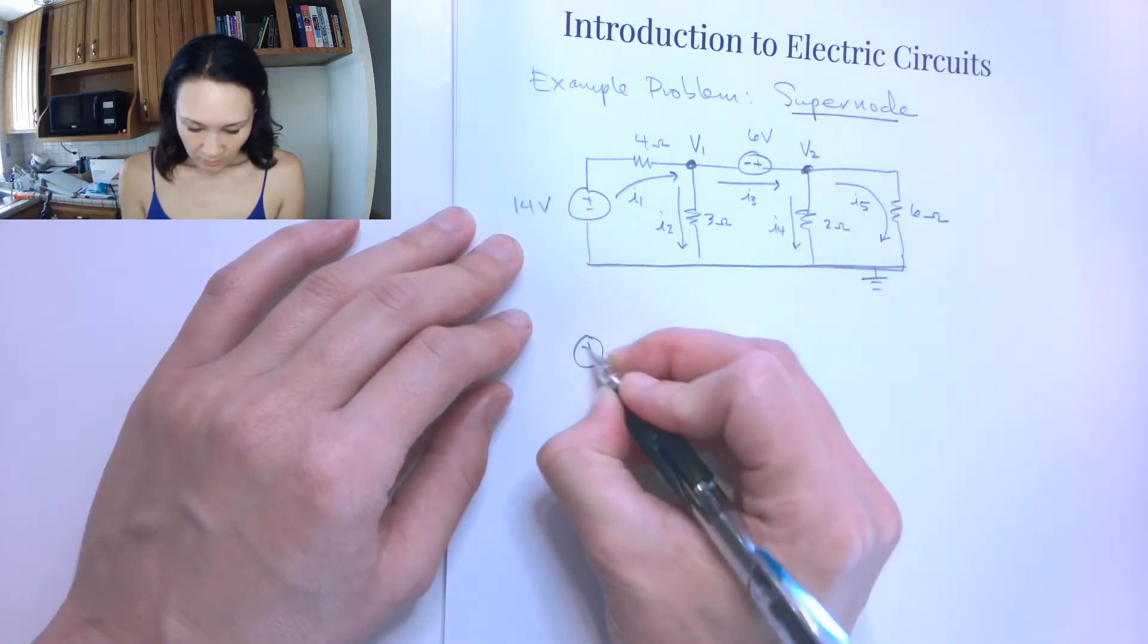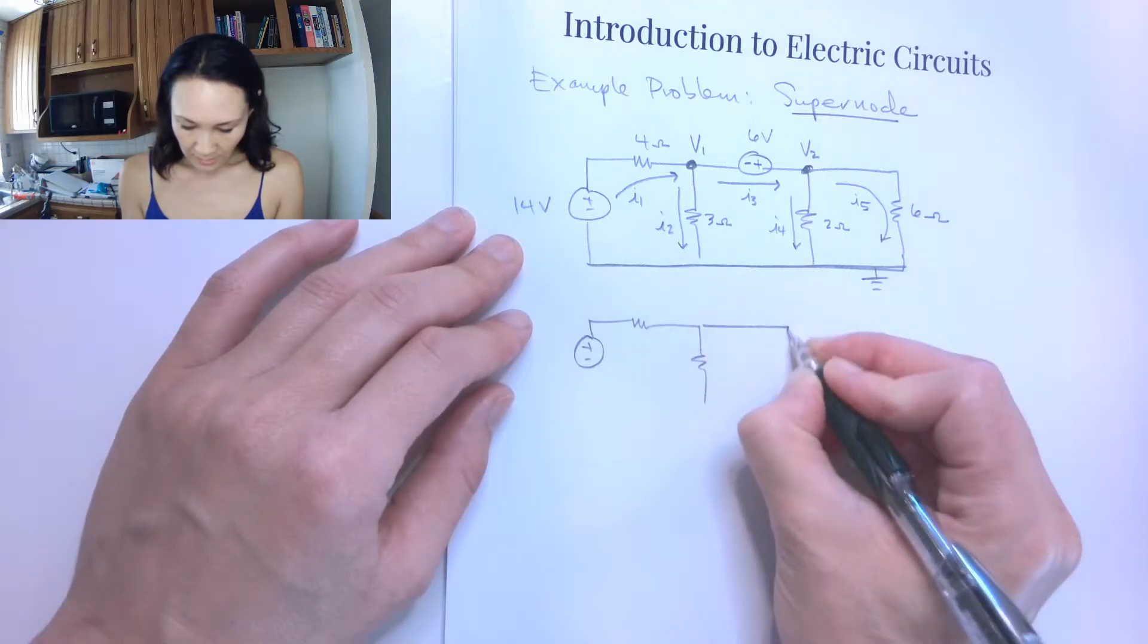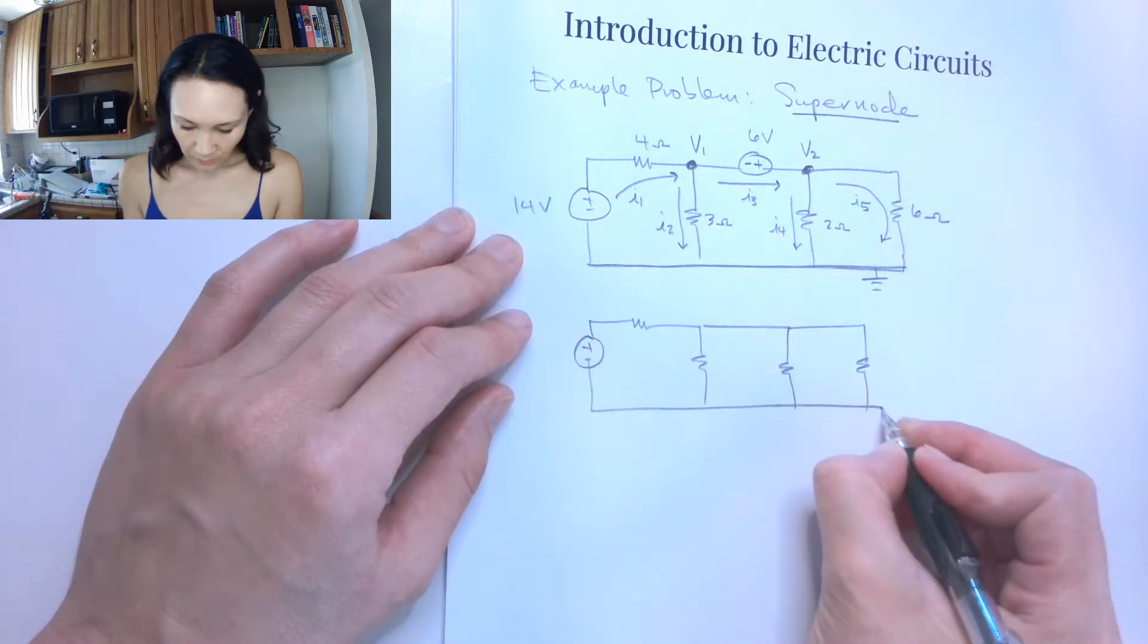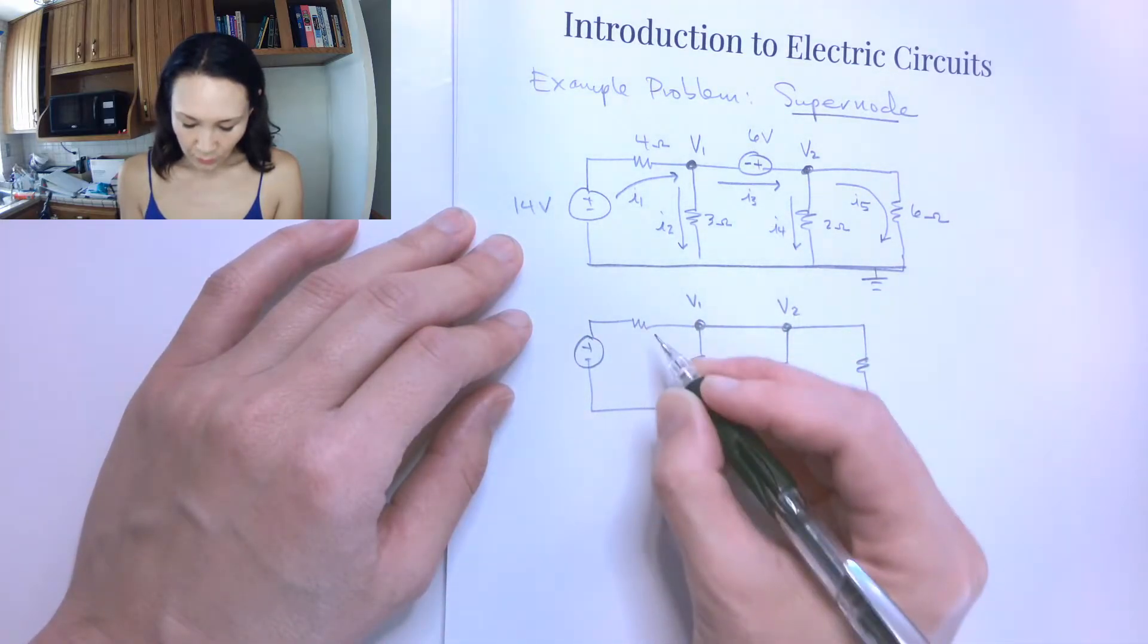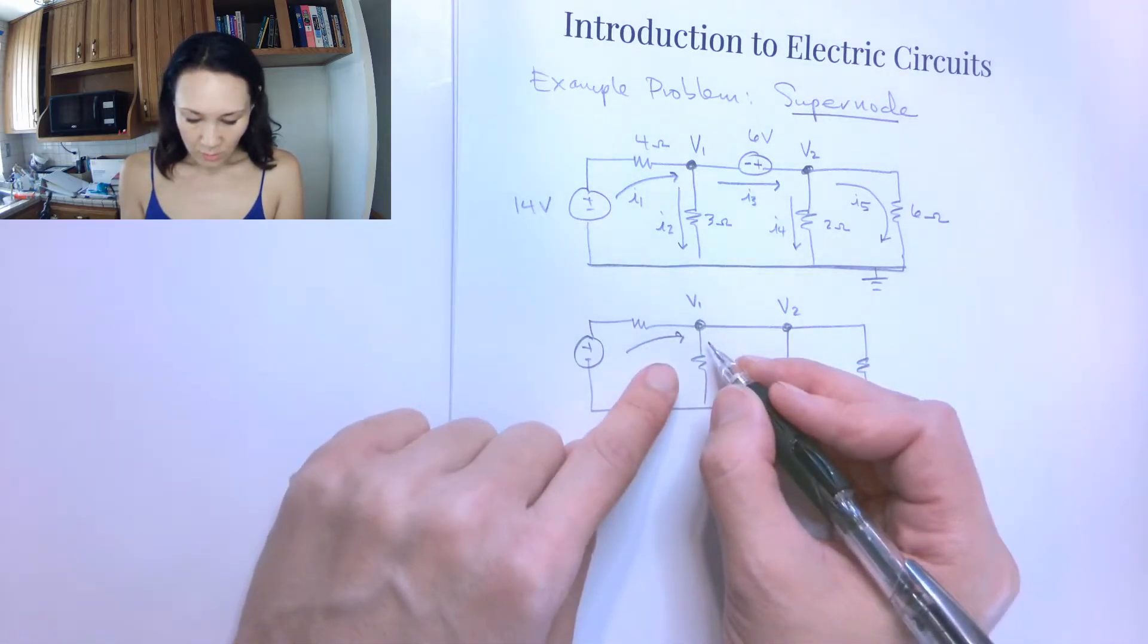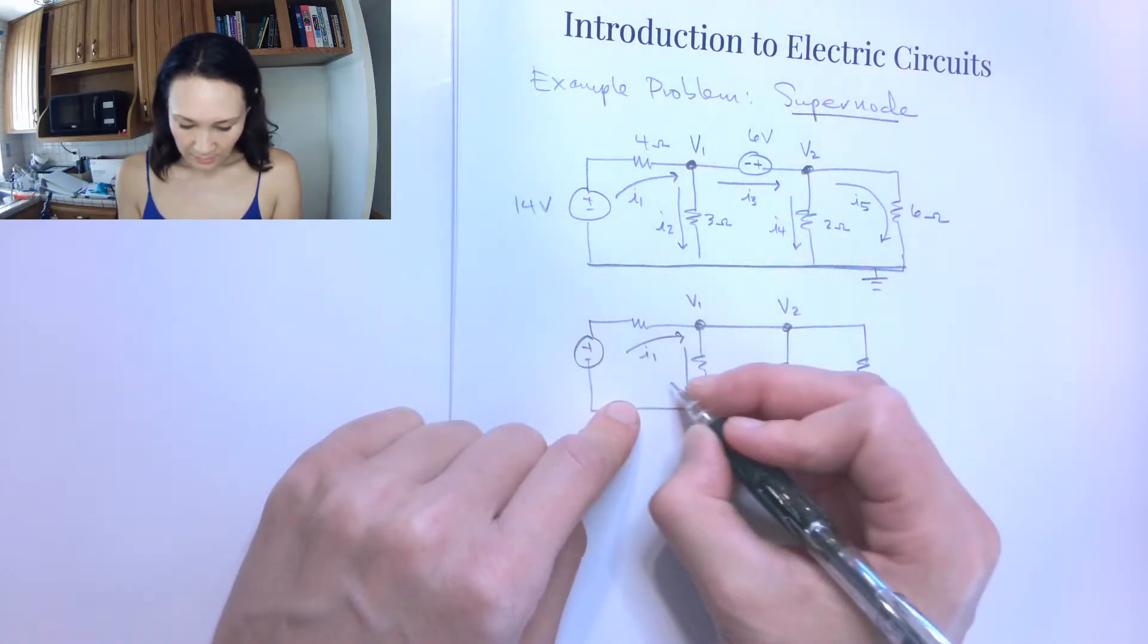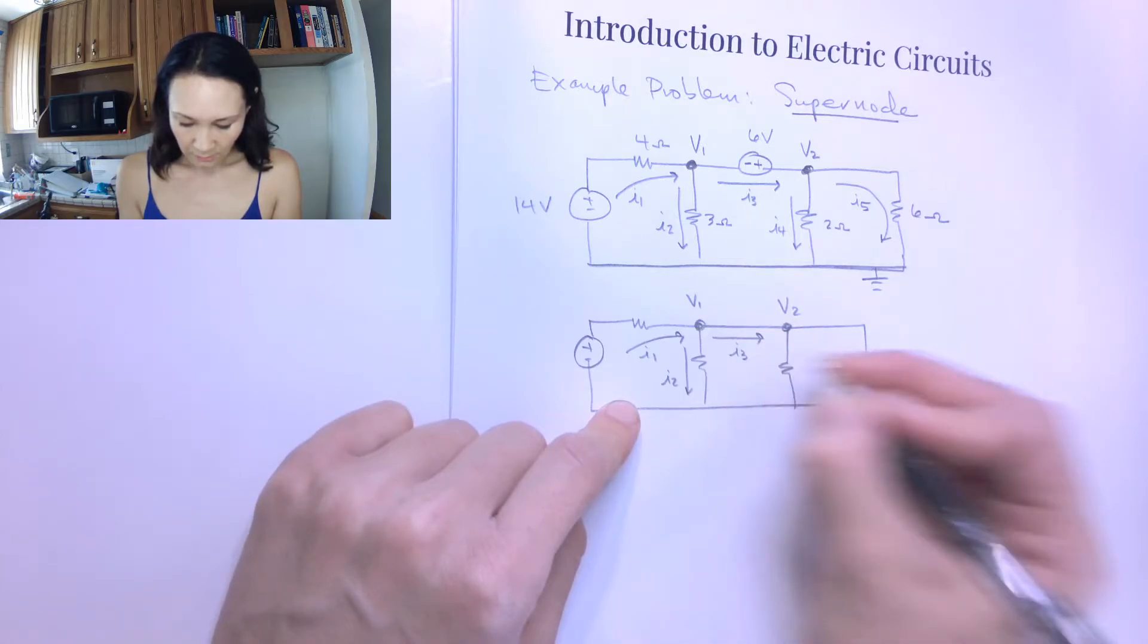So my supernode circuit is going to now look like this, where this is still V1 and this is still V2. But now the current that's coming into this node V1 is the current coming in is I1, the current coming out is I2 and I3.